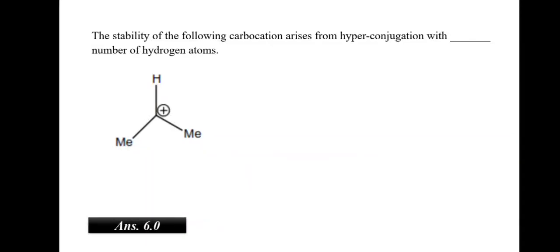The stability of the following carbocation arises from hyperconjugation with dash number of hydrogen atoms. So, we know that the number of hydrogen atom is based on the alpha hydrogens which are present. These alpha hydrogens will be connected with alpha carbon. So, here you can see that there are 2 alpha carbons. Each methyl group will represent an alpha carbon. So, there are 3 hydrogens attached to the alpha carbon. Thus, totally you would be having 6 alpha hydrogen in this structure.